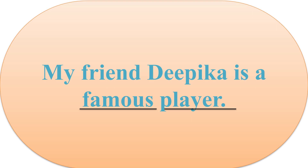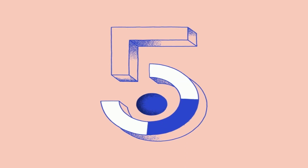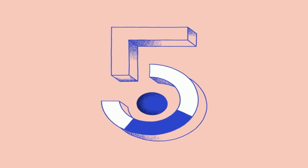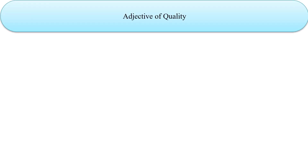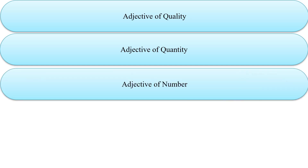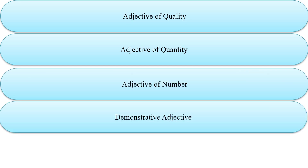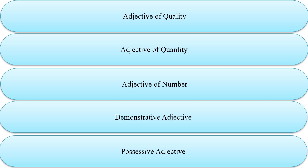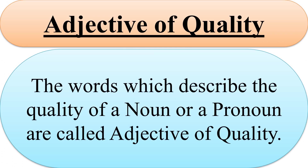Now, let's see the kinds of Adjectives. There are five kinds of Adjectives: Adjective of quality, Adjective of quantity, Adjective of number, Demonstrative Adjective, and Possessive Adjective. Number one is Adjective of quality.